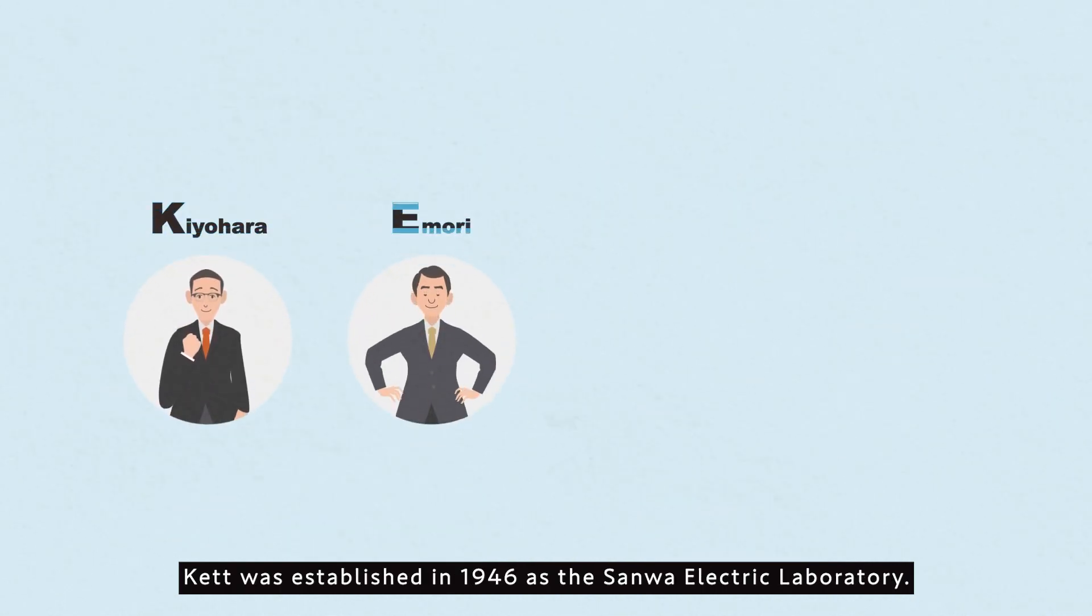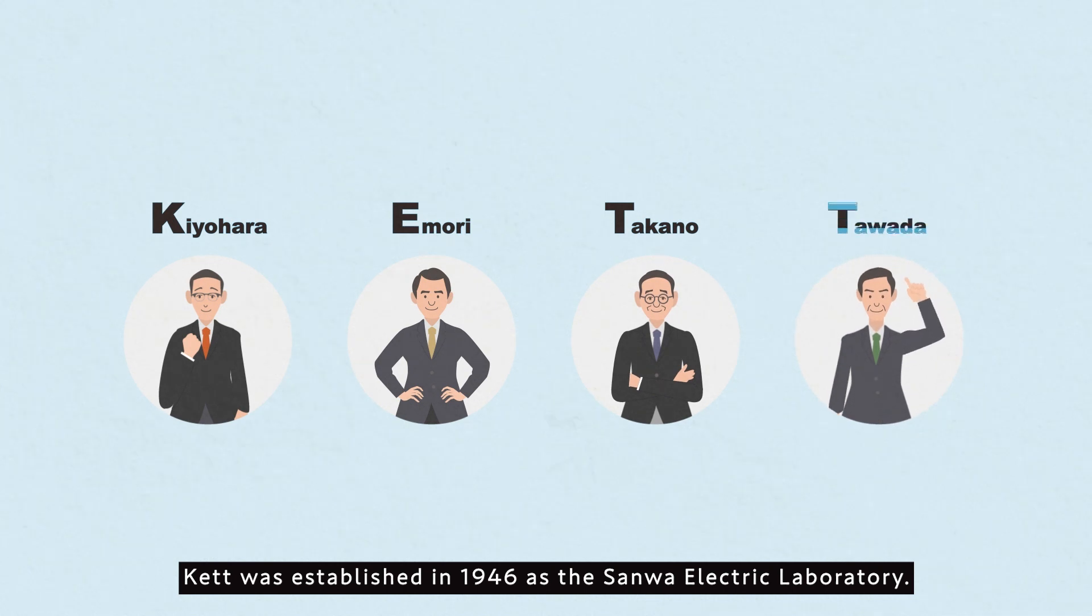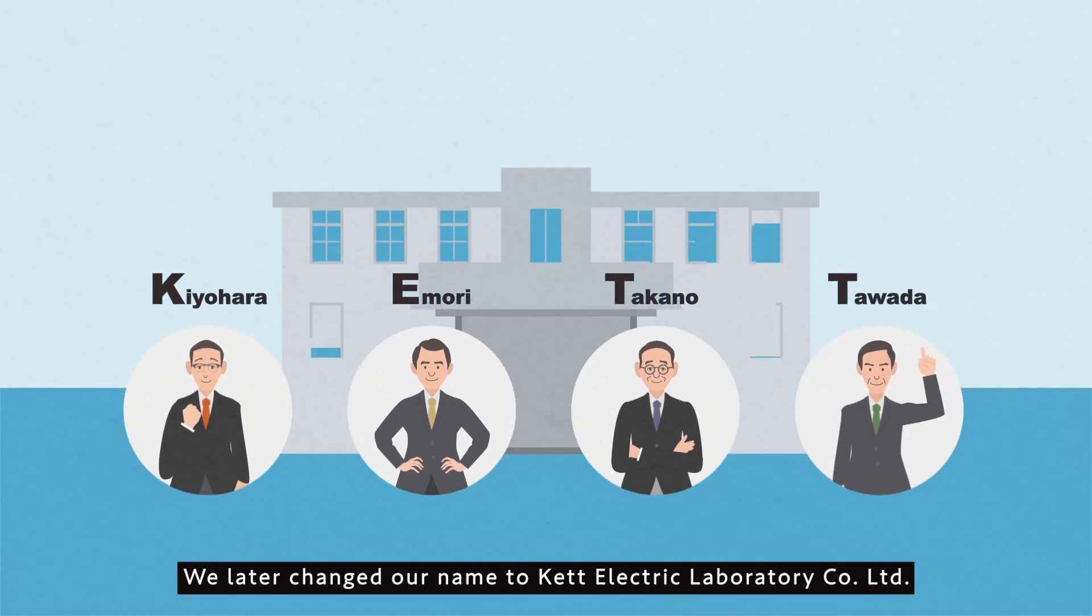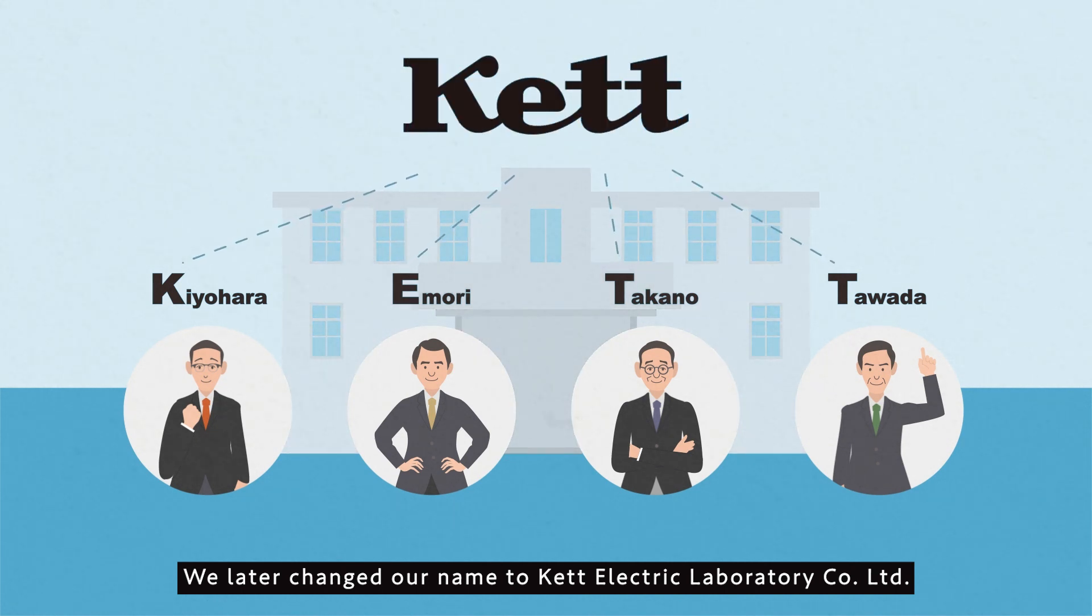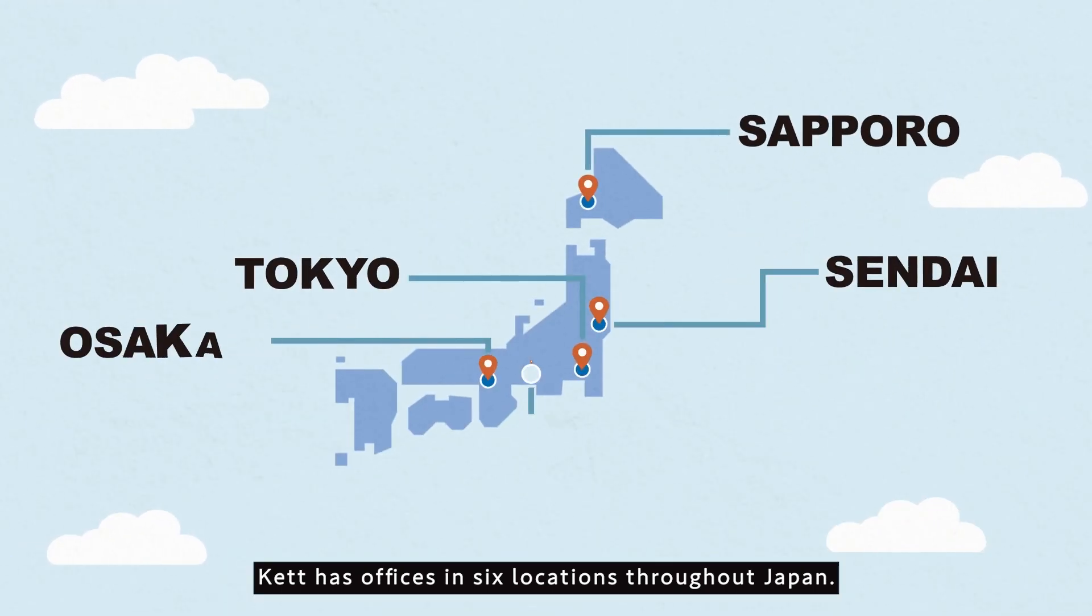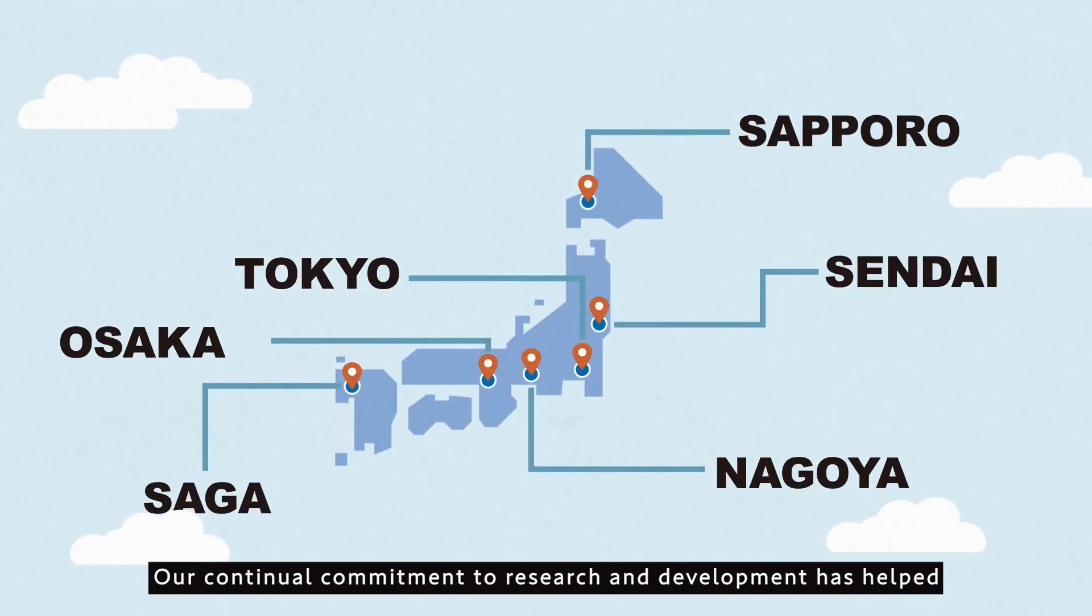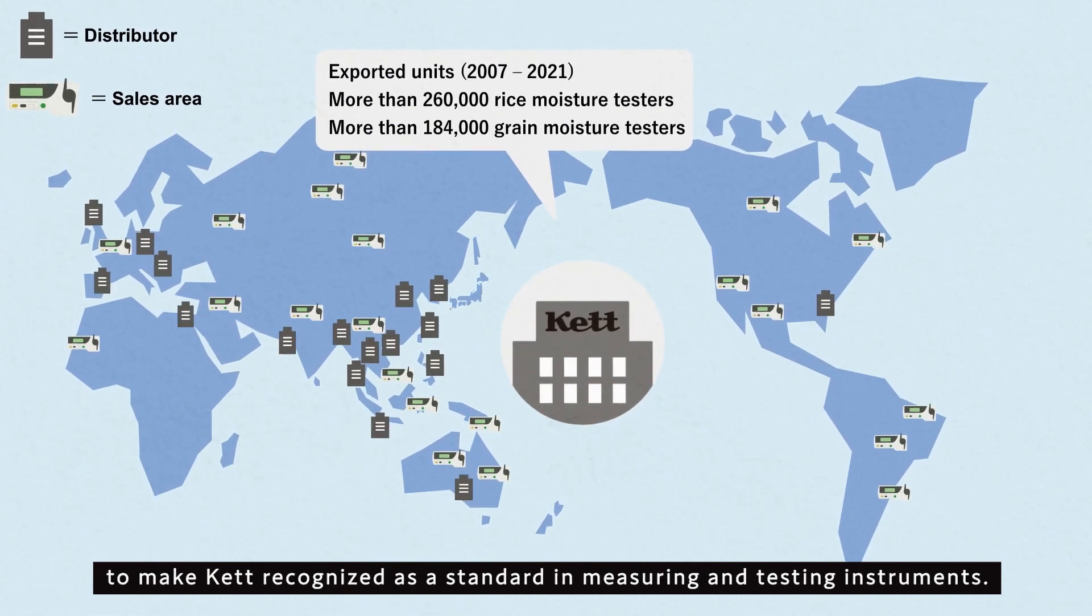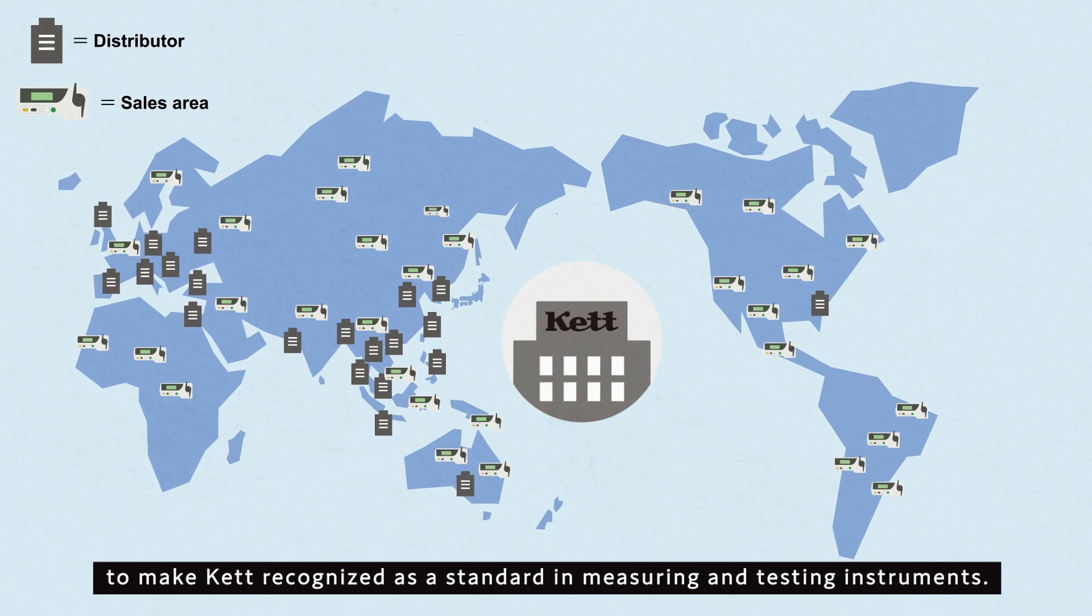Kett was established in 1946 as the Sanwa Electric Laboratory. We later changed our name to Kett Electric Laboratory Company Limited. Kett has offices in six locations throughout Japan. Our continual commitment to research and development has helped to make Kett recognized as a standard in measuring and testing instruments.